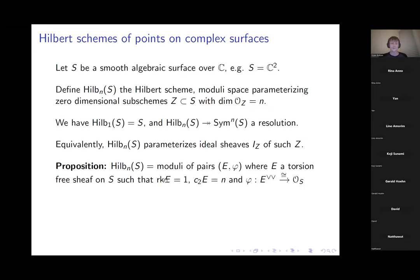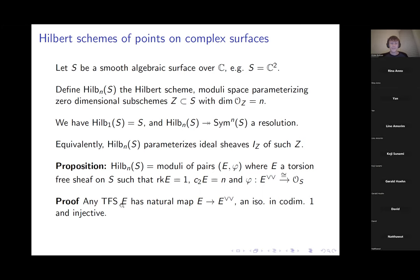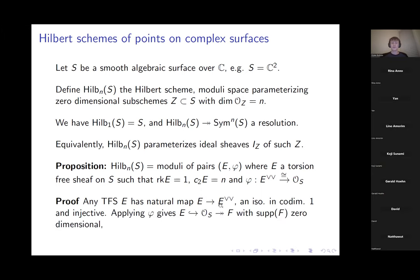For the proof: any torsion-free sheaf E has a natural map to its double dual, which is an isomorphism in codimension one and is always injective. Our isomorphism of E^{∨∨} with the structure sheaf of S then gives an inclusion of E into the structure sheaf, so we can think of E as a subsheaf of the structure sheaf.